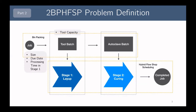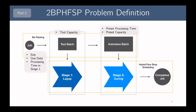After stage one, we take these tool batches and pack them again in a second bin packing problem into autoclave batches. Autoclave batches are constrained by the same preset capacity and are scheduled in stage two, which we call the curing stage, using a preset processing time as well — the same across all autoclave batches. This gives us our completed jobs. We can see this hierarchical batching structure of jobs into tool batches and then tool batches into autoclave batches.